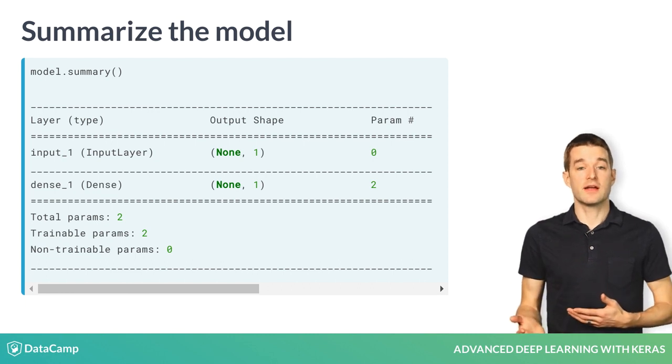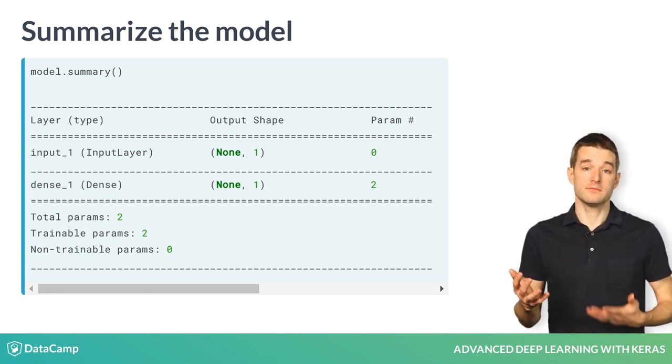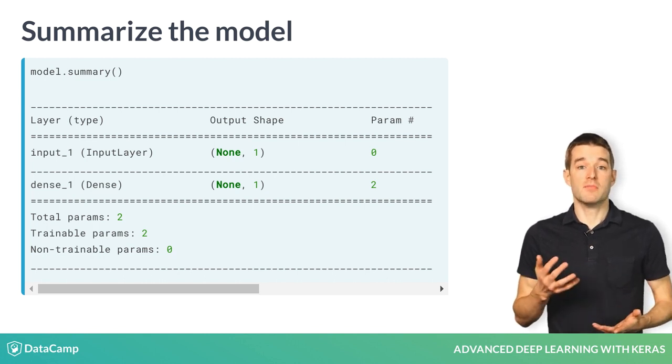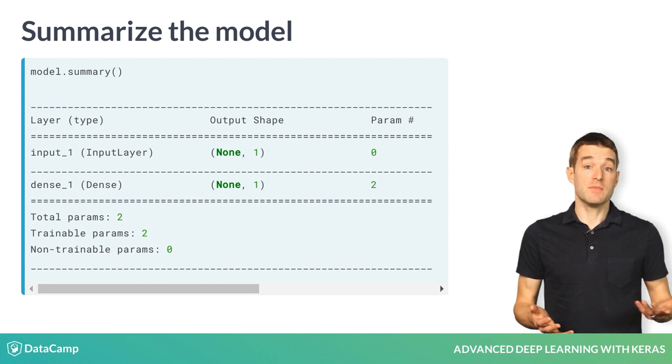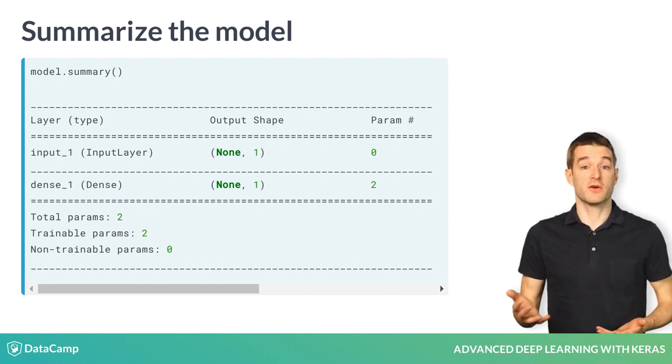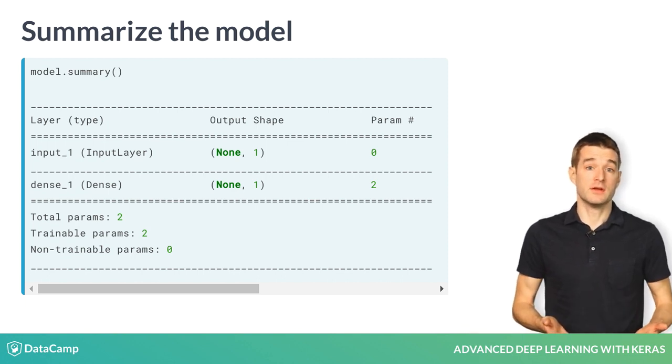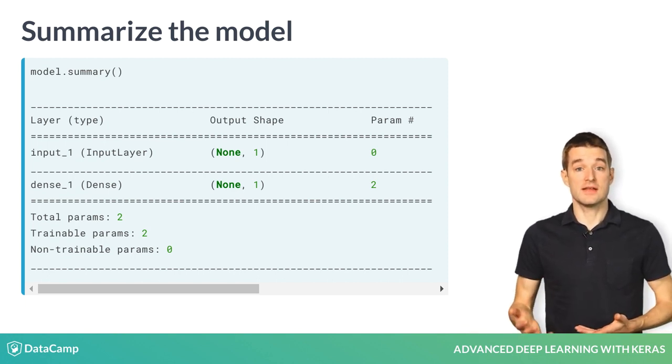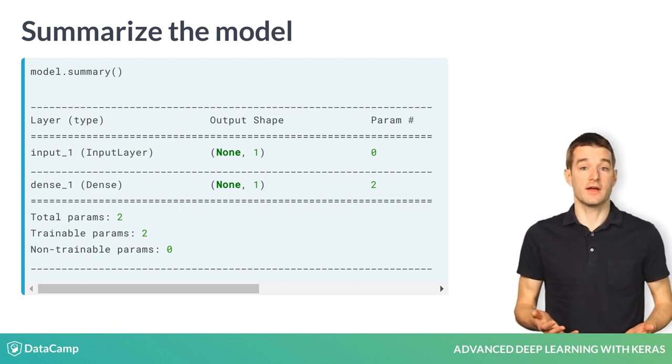The output layer has two parameters, which makes sense as you have one input and one output. The model you have defined here is a standard linear regression model, equivalent to y equals mx plus b. m and b are the two parameters. In the terminology of linear regression, m is the slope and b is the intercept. In the terminology of Keras, m is the weight of the dense layer and b is the bias of the dense layer.